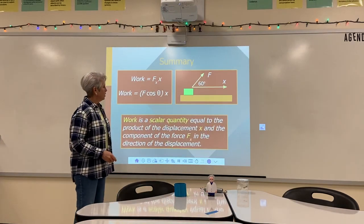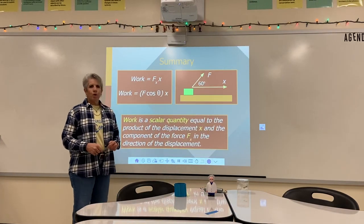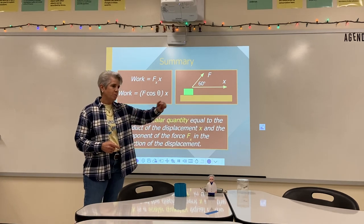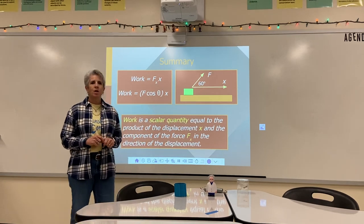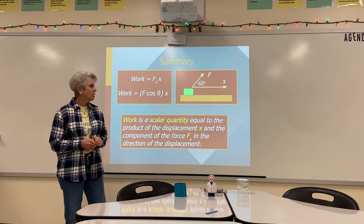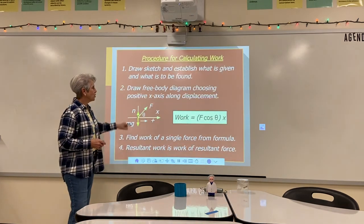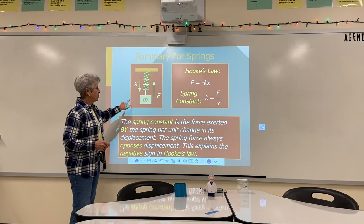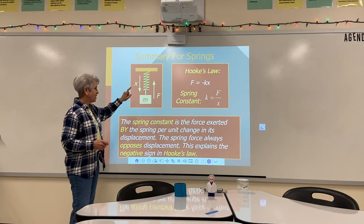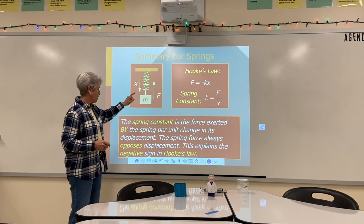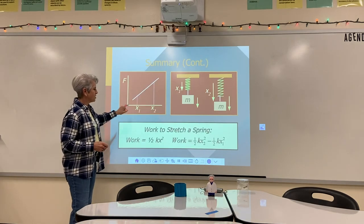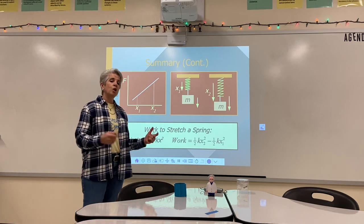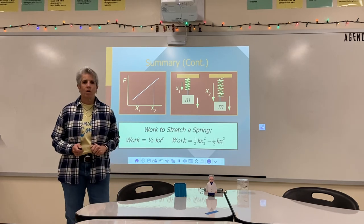So to sum things up: work is force times distance times the cosine of theta, because the force and displacement need to be in the same direction when applying a constant force. For springs, there is a spring constant K, which is change in force over change in stretch. Work for springs is found as one half K X squared, or a change in one half K X squared.